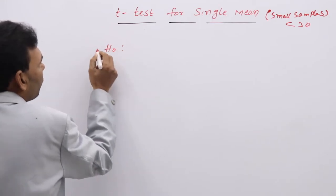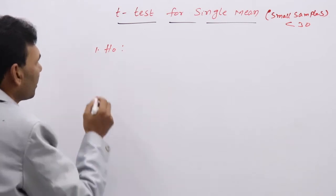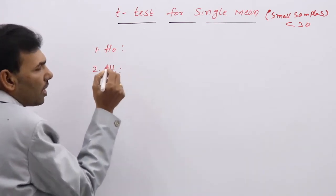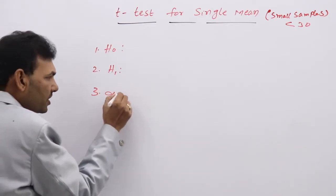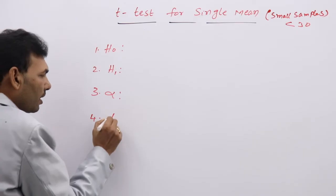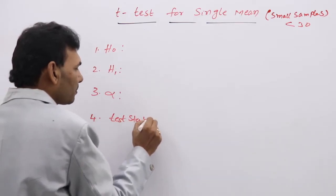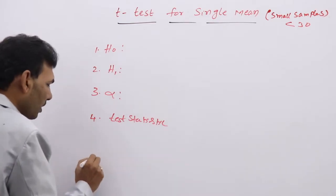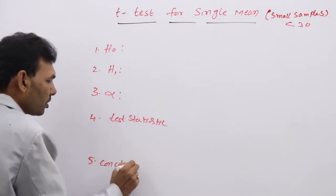The steps involved in every testing procedure are: writing H0 (null hypothesis), H1 (alternative hypothesis), level of significance, writing the test statistic, and finally the conclusion.